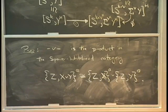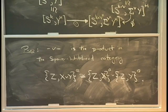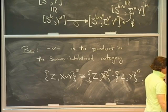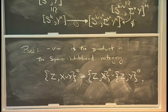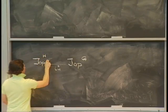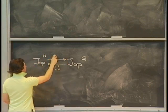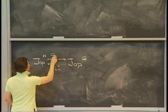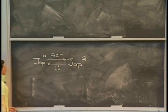Now I want to do the equivariant version, and that's where I left off yesterday and want to pick up today. Let me start with an observation. We saw last time — I should probably give these things names — I had my category of G spaces, and then we saw that I have my forgetful functor, which took me to H-spaces.